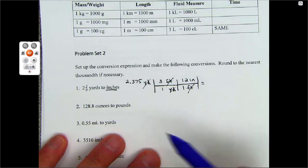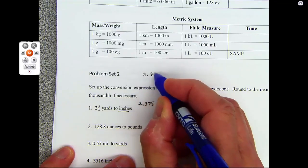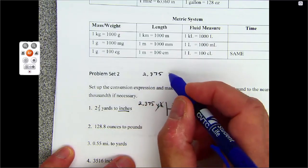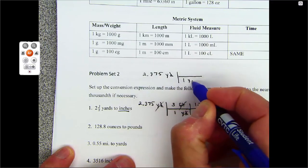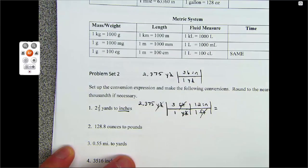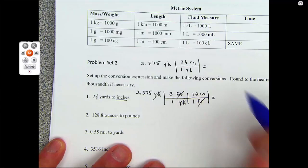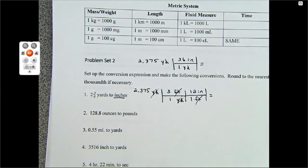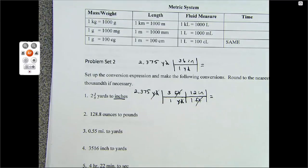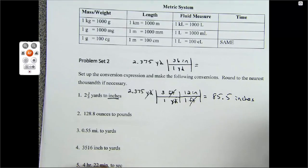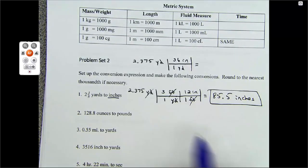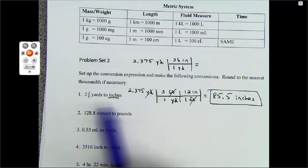The other way to do this problem in one step is to go 2.375 yards, and go one yard is 36 inches. Which one's right? They're both right. If we just multiply this out, we get 85.5 inches. This is how we have to do the English system. We can't just move the decimal point right and left.